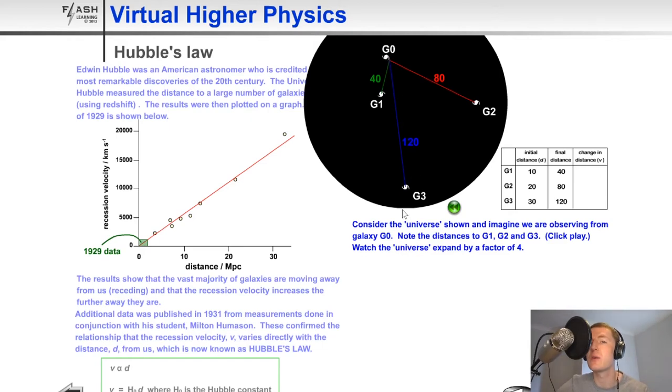So if we now look at the distances between the galaxies, we've got 40 megaparsecs between G0 and G1. We've now got 80 megaparsecs between G0 and G2 and we've got 120 megaparsecs between G0 and G3 and those have now been inserted into the table.